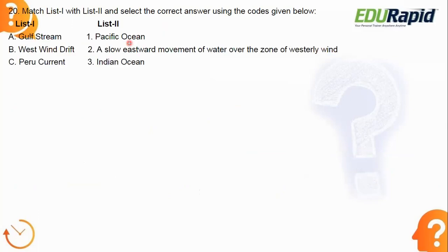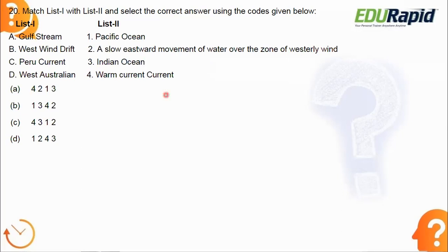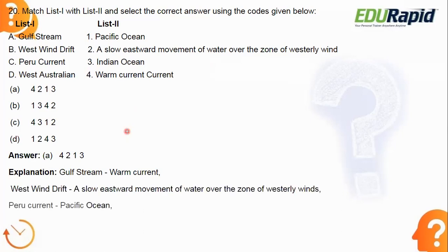Next: match List 1 and List 2. List 1: Gulf Stream, West Wind Drift, Peru Current, West Australian Current. List 2: warm current, slow eastward movement of water over the zone of westerly winds, Pacific Ocean, Indian Ocean. The correct sequence is 4-2-1-3, making option A correct.